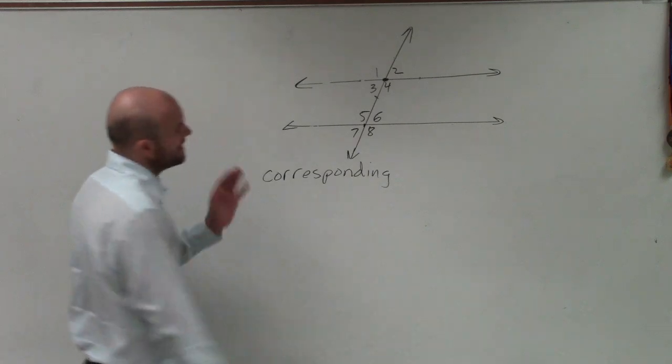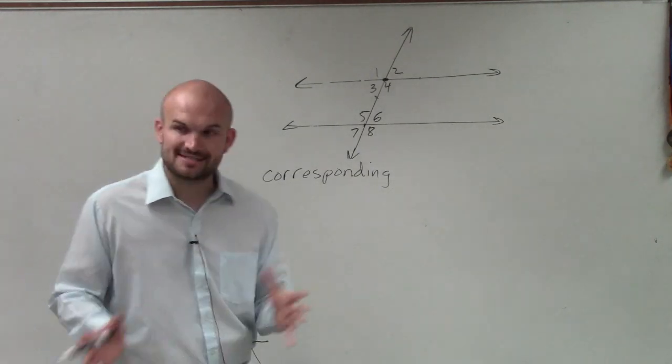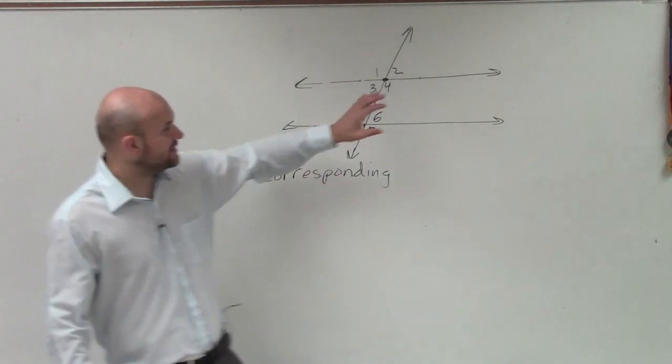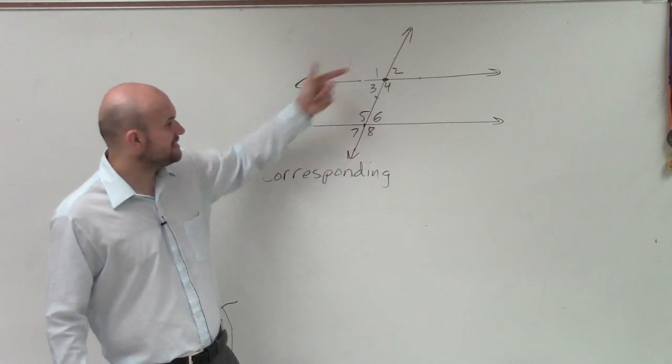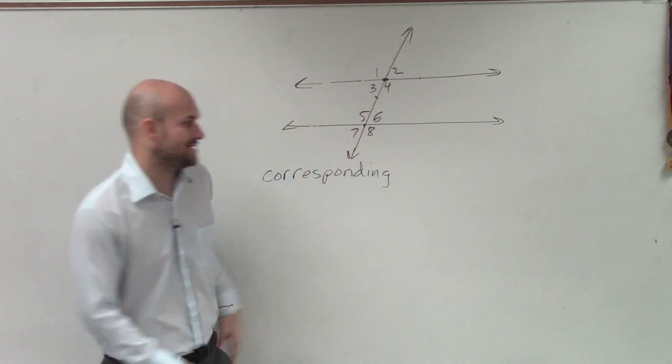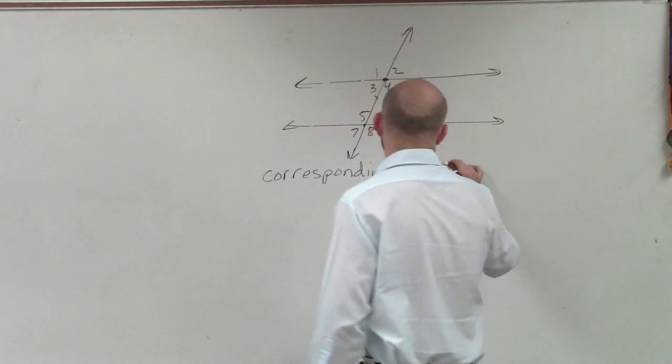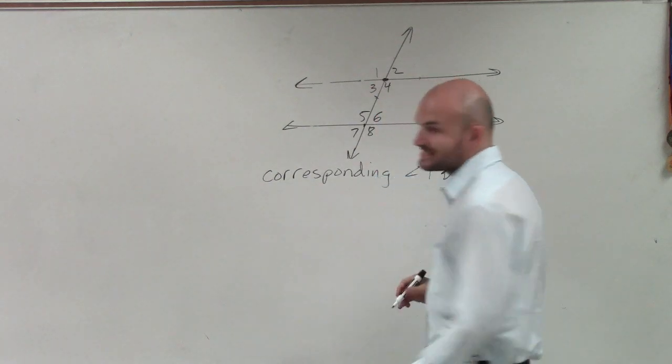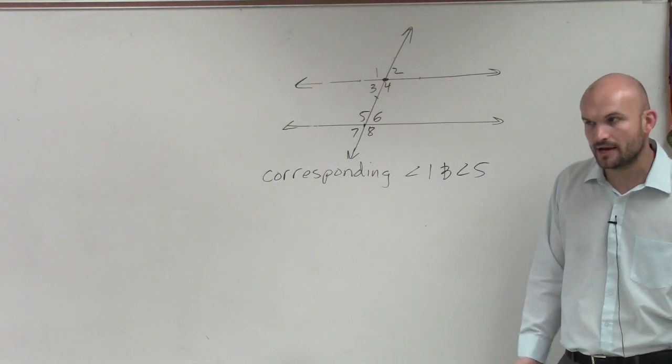Corresponding angles, all right? Remember guys, corresponding angles are angles that are in the exact same position. So if we look at these two intersections, you can see there are a couple of angles in the exact same position. You could say angle 1 and angle 5 are in the exact same position, just at different points on the intersection.